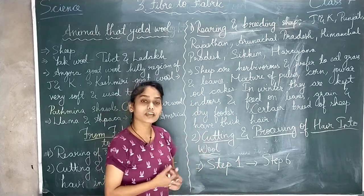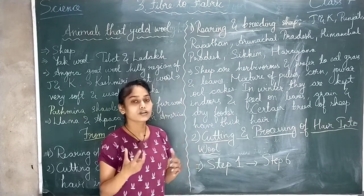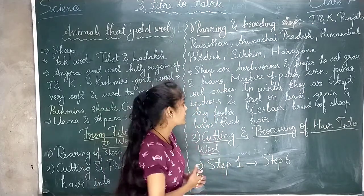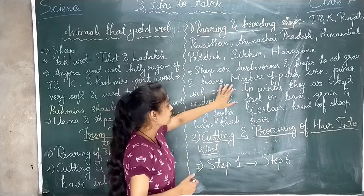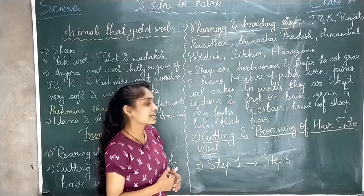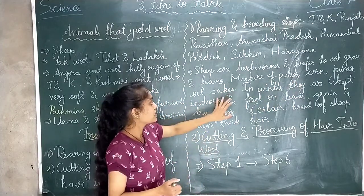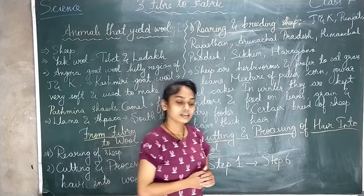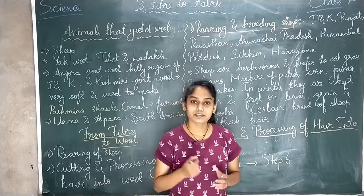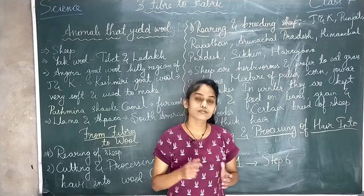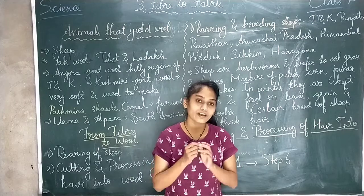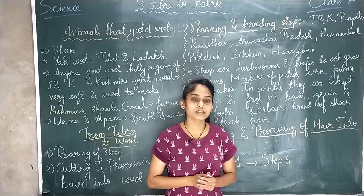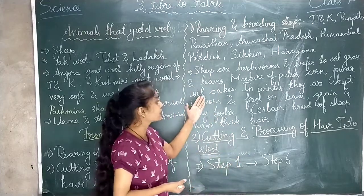Rearing means giving sheep proper attention and good food. Sheep are good animals that prefer to eat grass and leaves. A mixture of pulses, corn, and oil cakes are used to feed the sheep. Oil cakes are, for example, mustard seeds or other such seeds — these are called oil cakes and they are fed to the sheep.